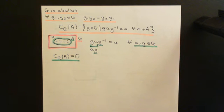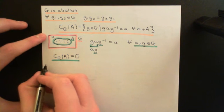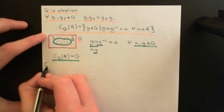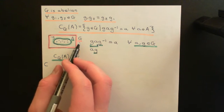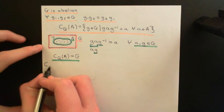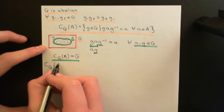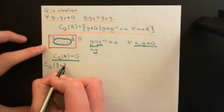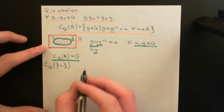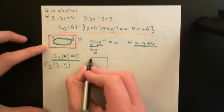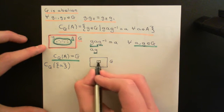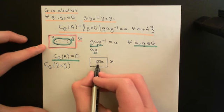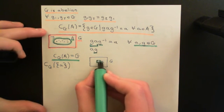The final thing I want to say about centralisers relates to the centraliser of a single element of the group in the group capital G. What if we took a subset capital A of the group capital G that contained only one element? So what if we took the centraliser of the subset containing a single element, which we'll call little a, in G? Here we have our group, and our subset is very small, containing just the single element little a.